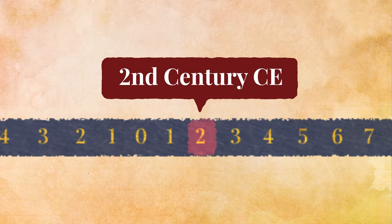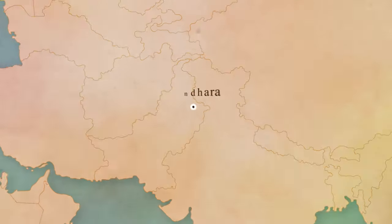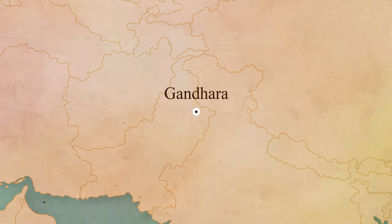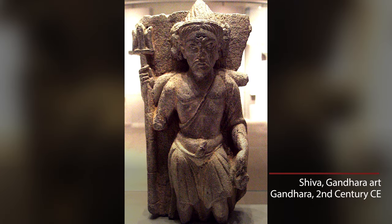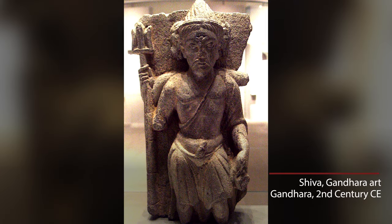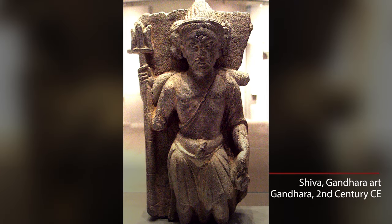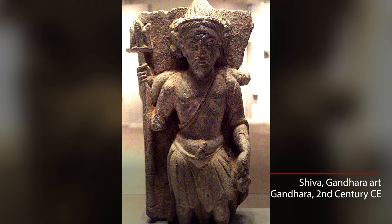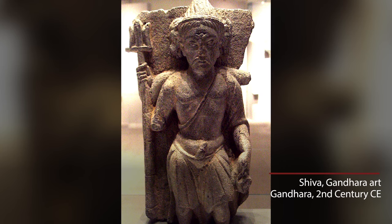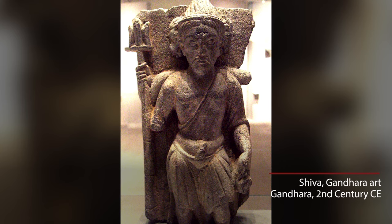Then around 2000 years ago in the Kushan period, we find images of a four-armed god holding a trident and having three eyes — attributes associated with Shiva. Even here, there is no family.